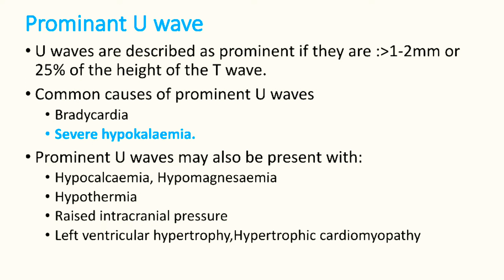Whenever a patient has muscle weakness, always remember to take an ECG — it may pick up U-waves and your diagnosis will be hypokalemic paralysis. Bradycardia can also produce U-waves. Prominent U-waves can also be seen in hypocalcemia, hypomagnesemia, hypothermia, raised ICP, left ventricular hypertrophy, and hypertrophic cardiomyopathy.